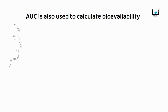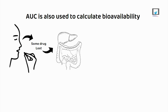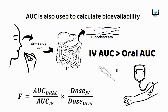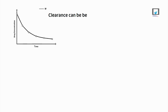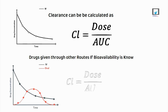AUC is also used to calculate bioavailability. For example, if a drug is given orally and some of it is lost before reaching the systemic circulation, its AUC will be less than when given directly into the bloodstream via the intravenous route. Clearance can also be calculated knowing the dose and the AUC — for drugs given intravenously, as shown with this equation, and for drugs given through other routes if bioavailability is known as well.